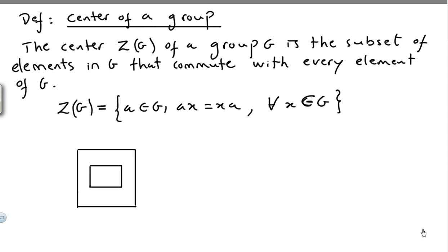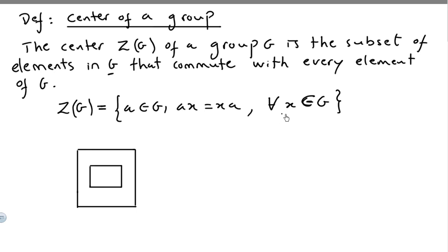In this video we introduce the concept of the center of a group. The center Z(G) of a group G is the subset of elements in G that commute with every element of G. So the center of G is the set of elements A in G such that AX equals XA for all X in G.